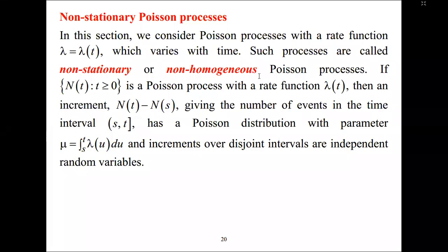Non-stationary Poisson processes. In this session, we consider Poisson processes with a rate function. So far, the Poisson processes we looked at had a constant lambda, but we are now going to look at Poisson processes where lambda is a function of T. The lambda varies with time. Such processes are called non-stationary or non-homogeneous Poisson processes.